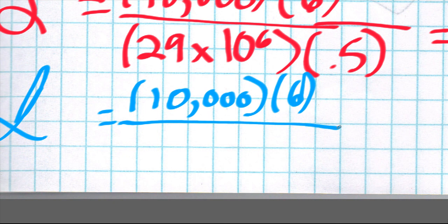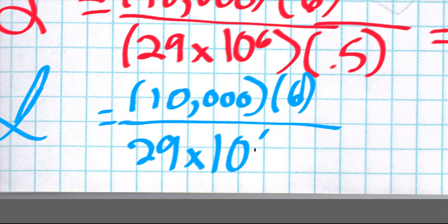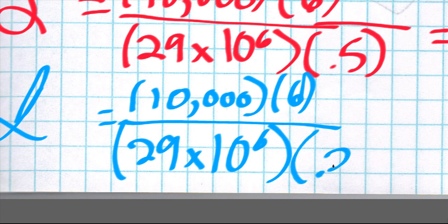And then instead of putting 0.5 on the bottom, it's going to be 0.2 because that's the cross-sectional area of C as noted above.